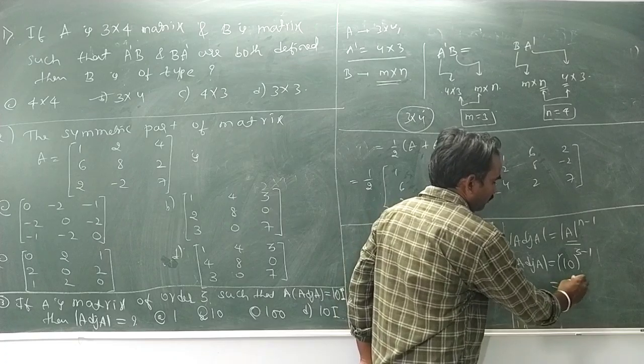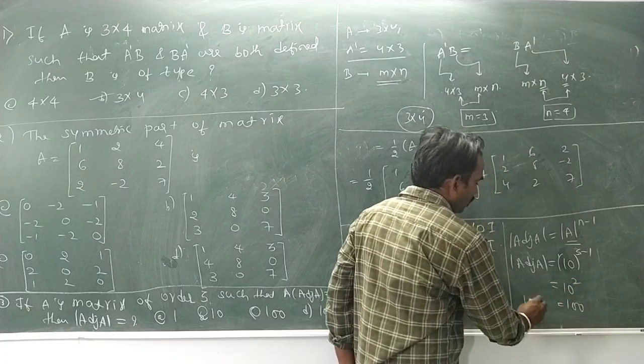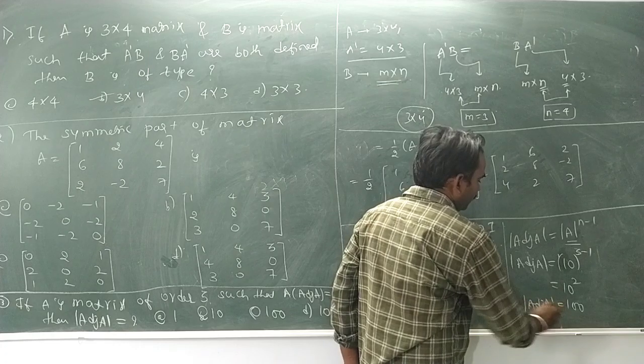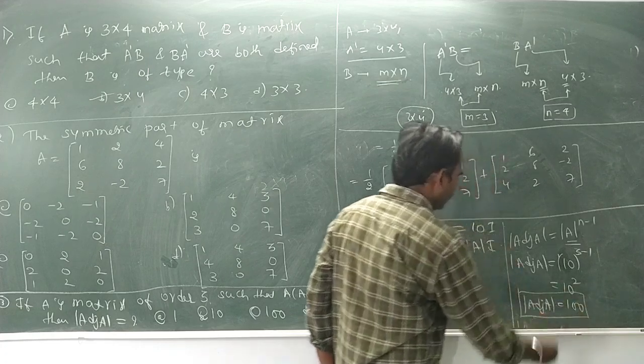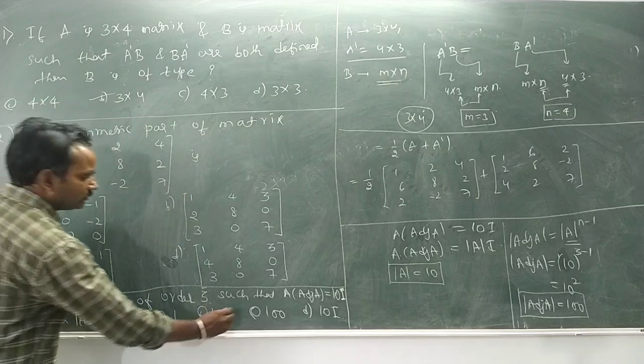3 minus 1 equals 2, so 10 to the power 2 equals 100. The determinant of adjunct of A is 100. Option C is correct.